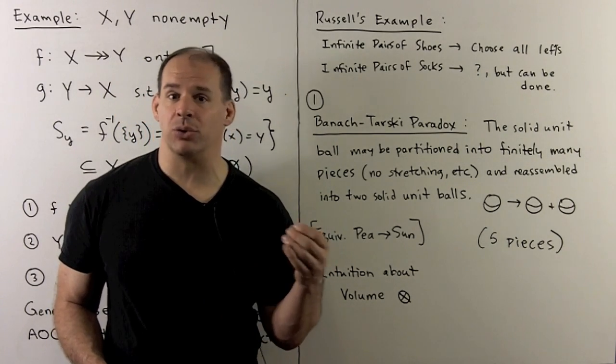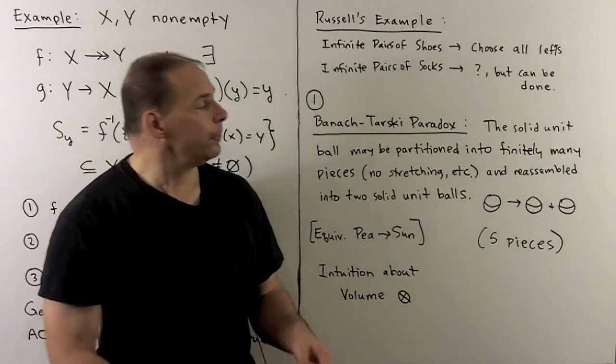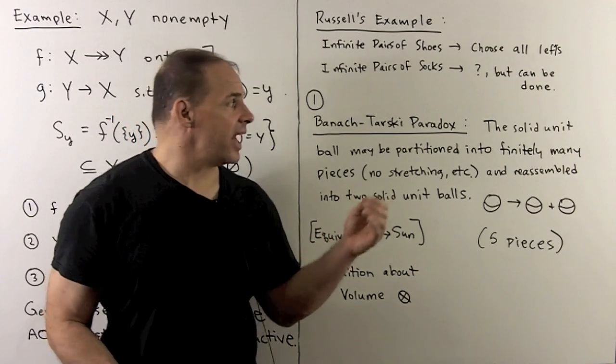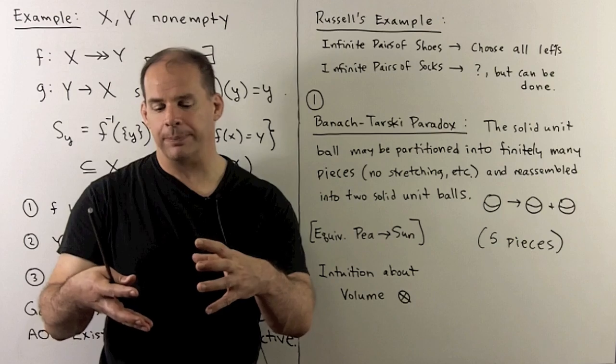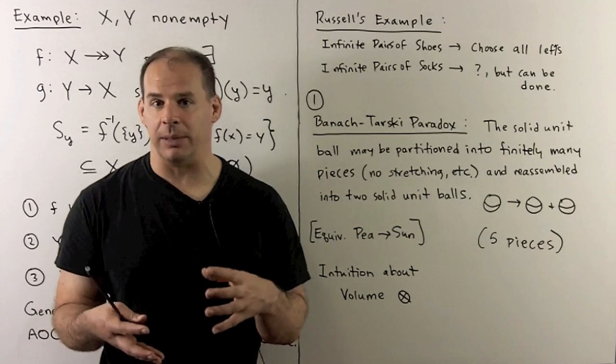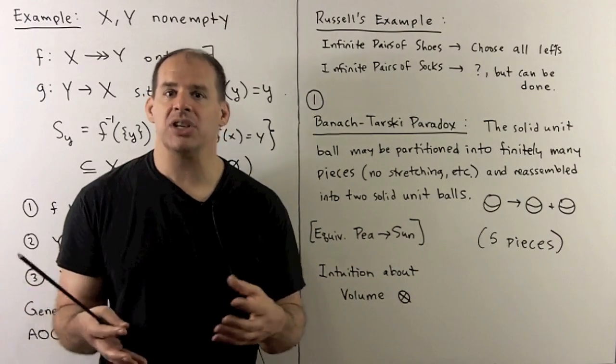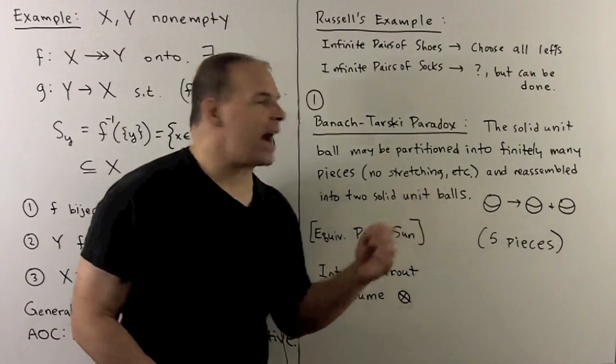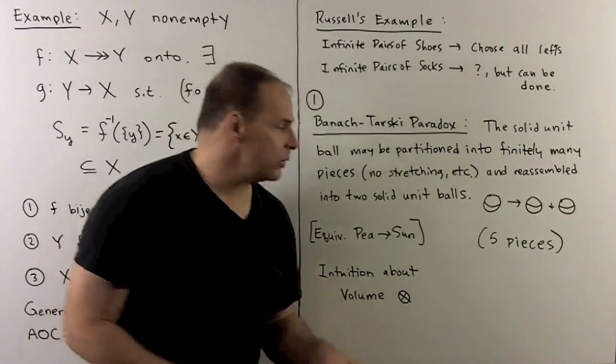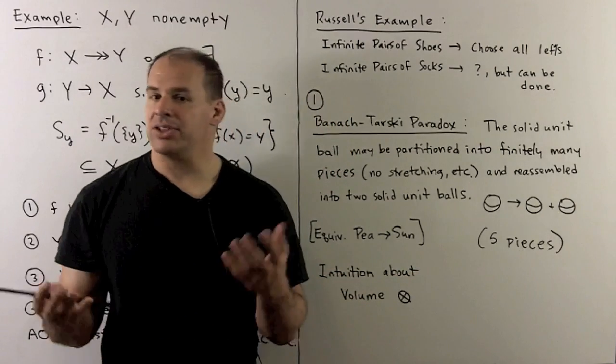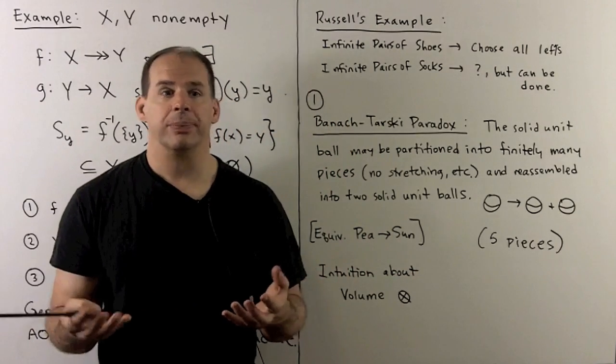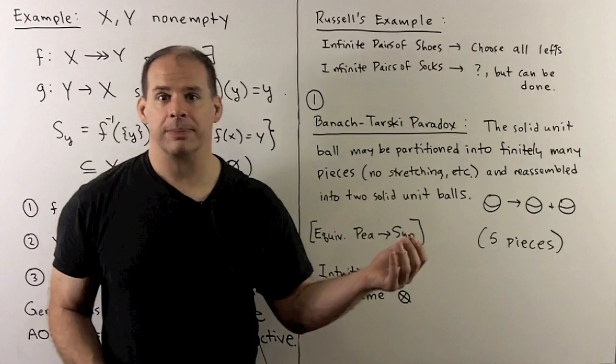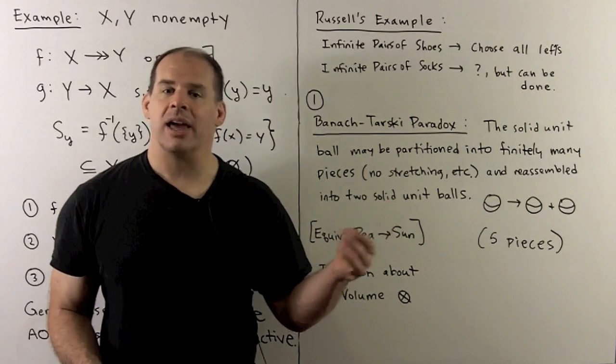You still might not be convinced that the axiom of choice is much of an assumption, but in the past it caused controversy based on the results it produced. One such result is the Banach-Tarski paradox. This really isn't a paradox, but it's very counterintuitive. This says we take a solid unit ball in R³, partition it isometrically into finitely many pieces with no distortion or stretching, take those pieces and reassemble them into two solid unit balls. With the axiom of choice, I could double the volume of a solid unit ball. It's known we could do this in five pieces, and this is not in our everyday experience. These pieces are not going to have a volume as we know it—we call these non-measurable sets. These days, we just take non-measurable sets as a feature of R³.